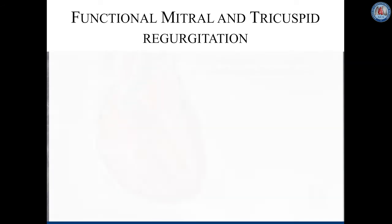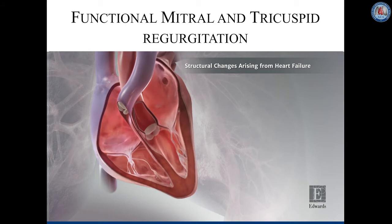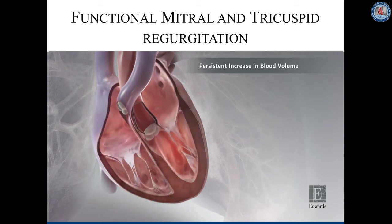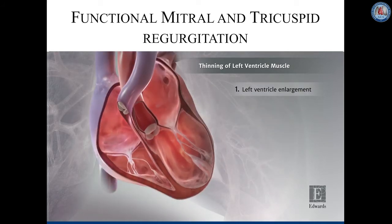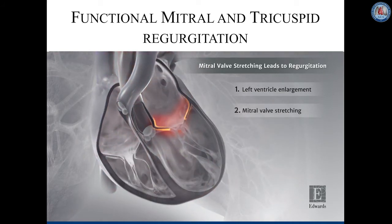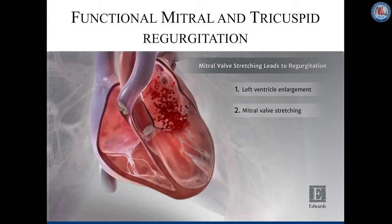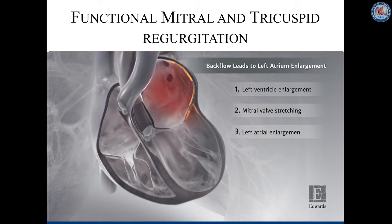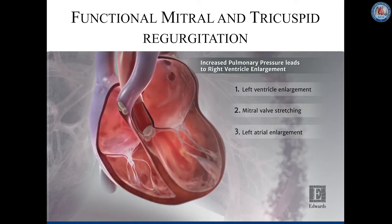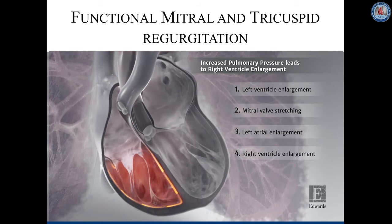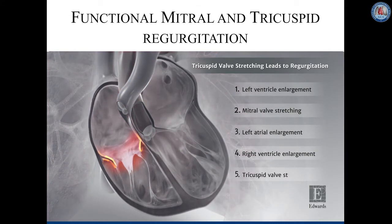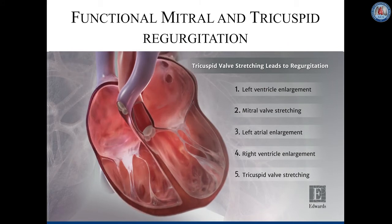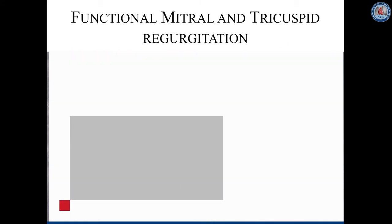This animation explains how functional mitral and tricuspid regurgitation are connected and why they are often encountered in the same patients. As the left ventricle dilates and thins, either in the setting of ischemic or non-ischemic heart failure, as volumes increase, the mitral annulus is stretched, leading to malapposition of the mitral leaflets and mitral regurgitation. As LA pressure and size increase, pulmonary hypertension ensues. This leads to RV dilatation and tricuspid annular stretching, again resulting in poor leaflet coaptation with tricuspid regurgitation.